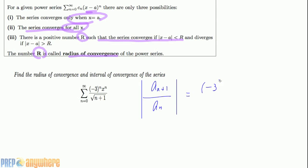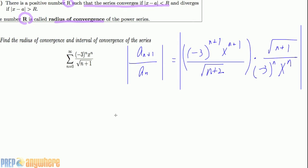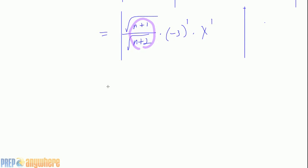We get (-3)^(n+1) · x^(n+1) over sqrt(n+2) divided by a_n, multiplied by the reciprocal, giving sqrt(n+1). Bringing like terms together: sqrt(n+1) over sqrt(n+2), and (-3)^(n+1-n) = (-3)^1. The absolute value makes that 3, and x^(n+1-n) = x^1. So the expression becomes 3|x| · sqrt(n+1) over sqrt(n+2).